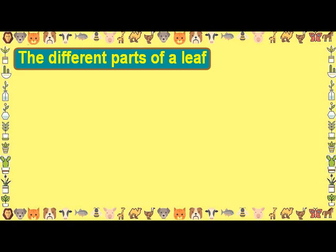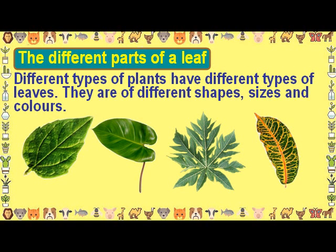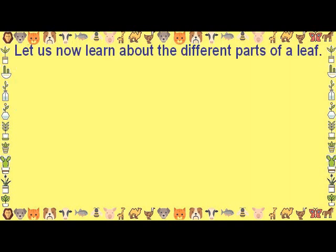The different parts of a leaf: different types of plants have different types of leaves — they vary in sizes and colors. Let us now learn about the different parts of a leaf.